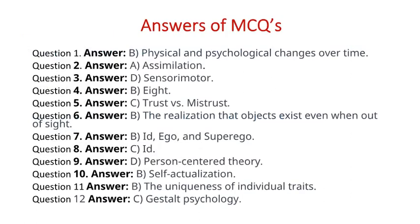Correct answers: Question 1 Answer B — Physical and psychological changes over time. Question 2 Answer A — Assimilation. Question 3 Answer D — Sensorimotor. Question 4 Answer B — 8. Question 5 Answer C — Trust vs. mistrust. Question 6 Answer B — The realization that objects exist even when out of sight.